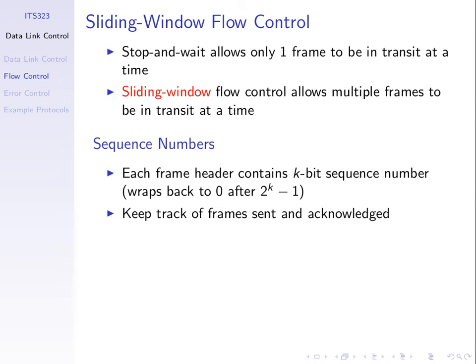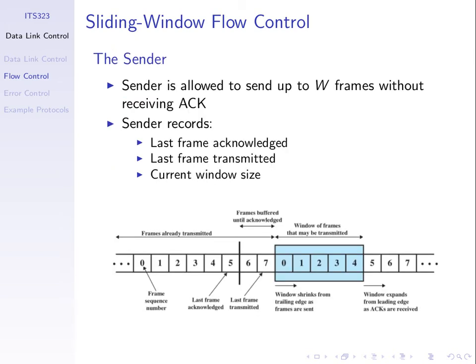We have sequence numbers to keep track of frames — every frame has a number. We wrap around when we get to the maximum number, because we have a limited number of bits, so we come back to zero. Both the sender and the receiver keep track of what they've sent, what they've received, and what's been ACKed. The sender keeps track of the frames for which it has received an acknowledgement — those data frames are done, finished.